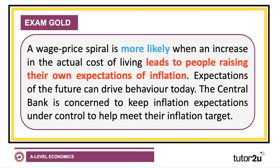A really key factor is the importance of expectations. A wage price spiral is more likely when an increase in the actual cost of living leads to people increasing their own expectations of inflation — expectations of the future often drive behaviour today. If people are bidding for higher wages, the central bank, in this case the Bank of England in the UK, may be concerned that inflation expectations may start to get out of control, threatening their ability to meet their inflation target. As The Economist wrote: 'If workers demand higher pay in the expectation of future price rises, that's an insurance that actually worsens the very thing it seeks to offset.'